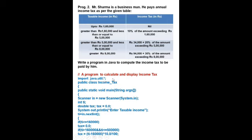For this program, first: import java.util.*; public class — here we will take 'IncomeTax' or any name since no class name is mentioned in the question. Then curly bracket, public static void main(String args) — this is for inputting arguments. Then curly bracket, Scanner in = new Scanner(System.in). int ti — ti is taxable income, which is in integer form, so we take int.